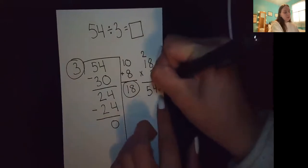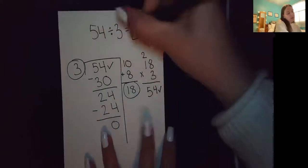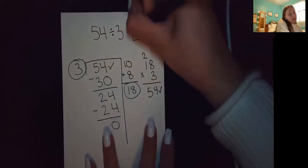Now this 54 matches my dividend, which tells me I got my answer right. So 54 divided by three is 18.